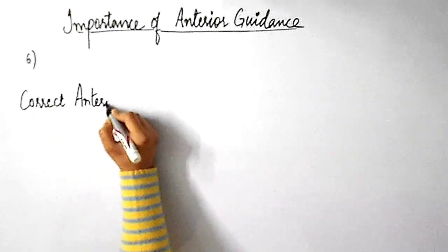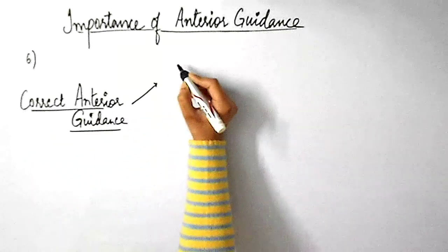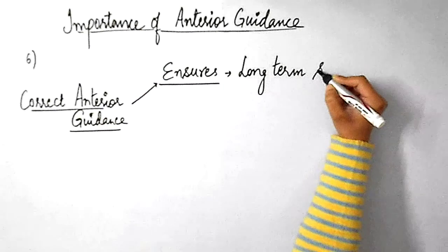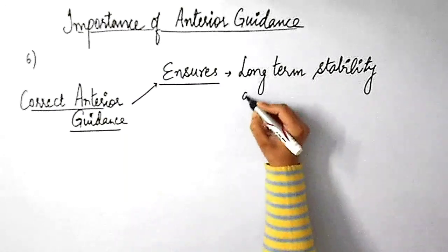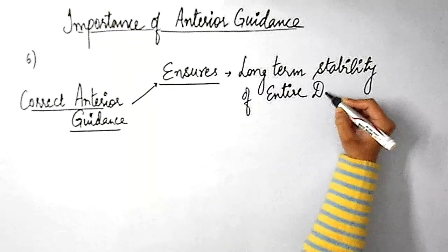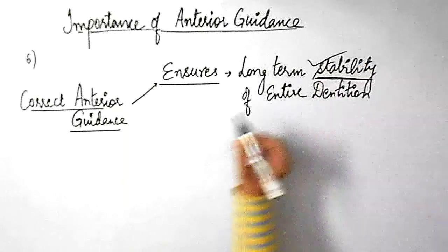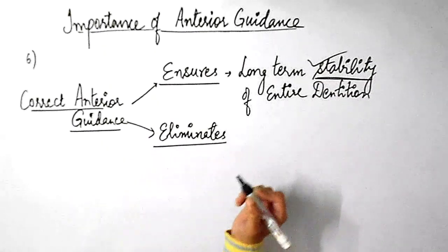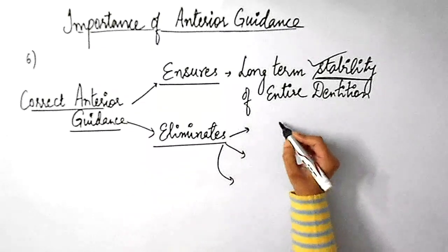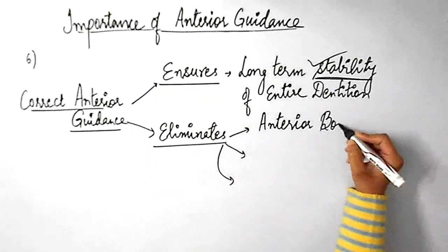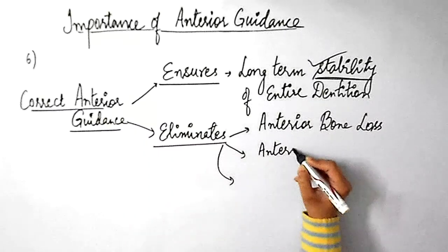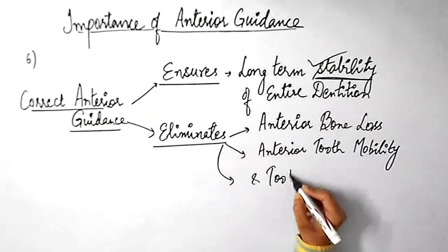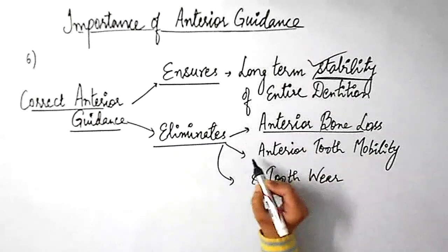The correct anterior guidance ensures the long-term stability of the entire dentition. When the anterior guidance is correct, it eliminates almost all the chances of anterior bone loss, anterior tooth mobility, and tooth wear, provided that there are no susceptible periodontal tissues and no excessive forces present.